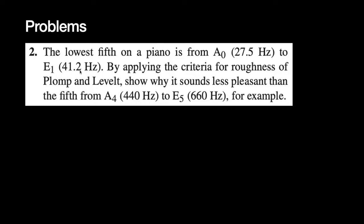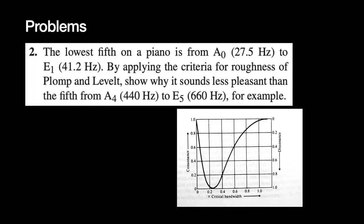Basically, you take two pairs: 27.5 and 41.2 Hz versus 440 and 660 Hz. To answer this question, you will need knowledge of critical bands — and I can hint that the critical bandwidth in the region of 27.5 to 41.2 Hz is around 90 Hz. And in the 500 Hz region the critical bandwidth is different. For exam: if the critical bandwidth at a particular frequency is needed, that table must be memorized. That's very important — please remember that.